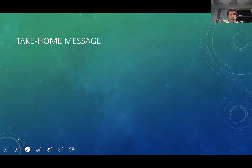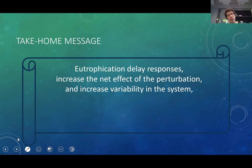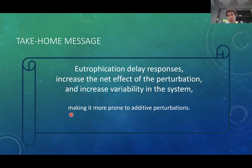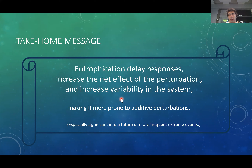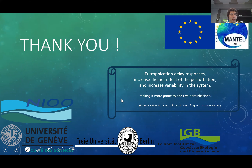The take-home message is that eutrophication potentially delays responses, increases the net effect of perturbations, and can definitely increase the variability of responses in the system. This probably makes the system more prone to additive effects of perturbation over time — a particularly important concern as we enter a future of more frequent extreme weather events. Thank you very much. I'm very open to questions and clarifications about the presentation.